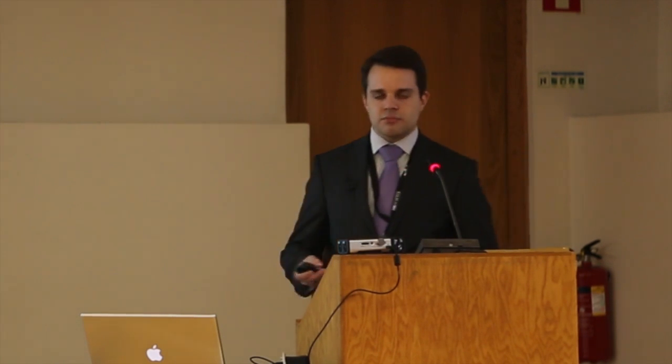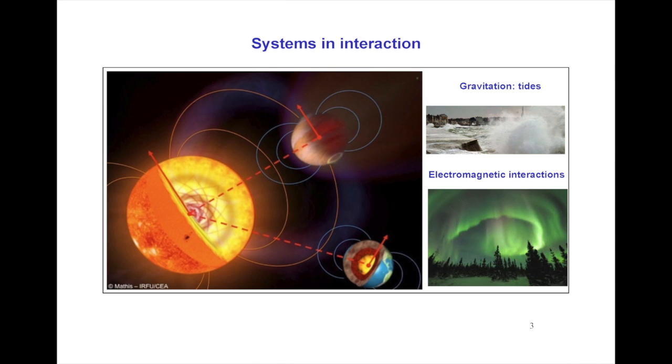If you have a magnetic field — which is the case for most low-mass stars — and if the planet also has a magnetic field, you will have electromagnetic interaction. We have the example of the Earth, where the interaction between the solar wind and the magnetic field of Earth's magnetosphere produces phenomena such as auroras. So what is the state of the art from the physical point of view of modeling these interactions?